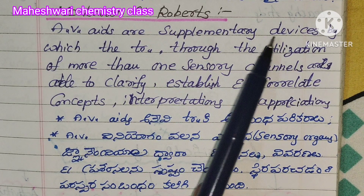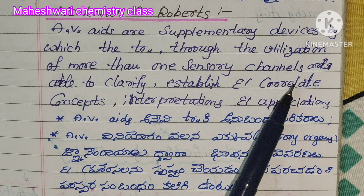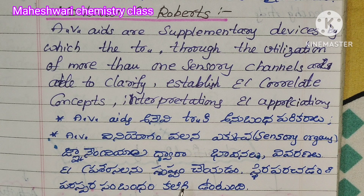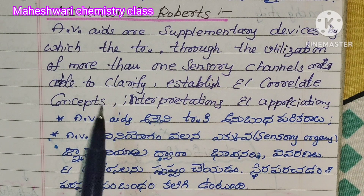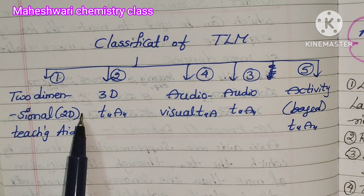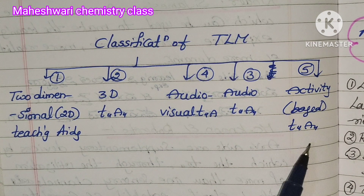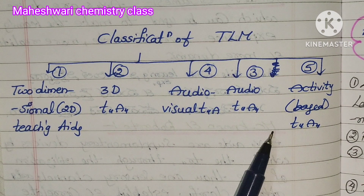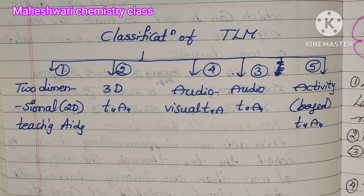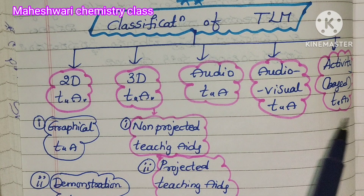Audio-visual aids are supplementary devices — anubandha parikaral — through which the teacher uses multiple sensory channels, i.e., sensory organs, to clarify, establish, and correlate concepts, interpretations, and appreciations. Now, classification of TLM: 2D teaching aids, 3D teaching aids, audio teaching aids, audio-visual teaching aids, and activity-based teaching aids.